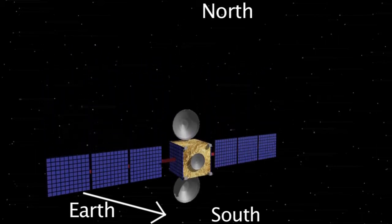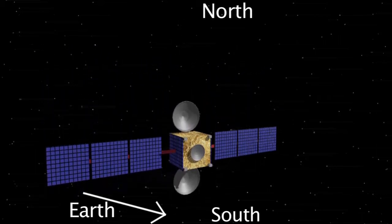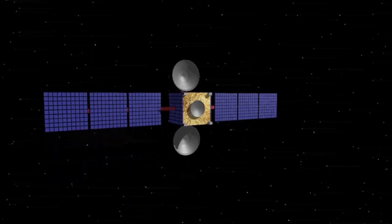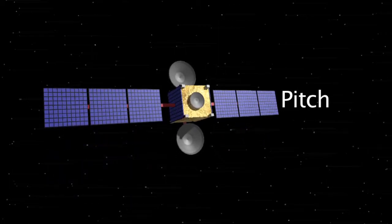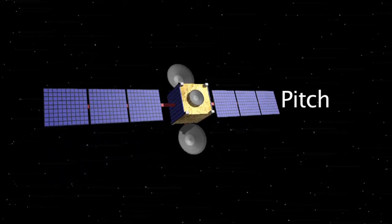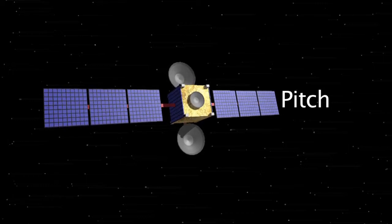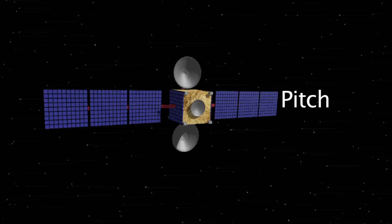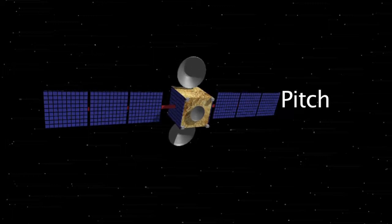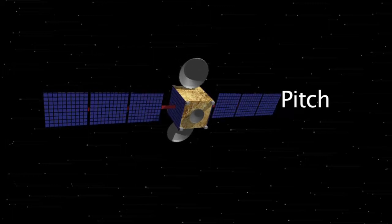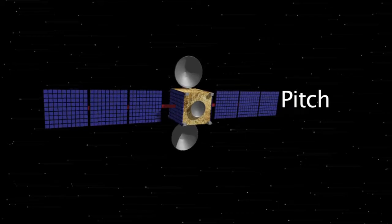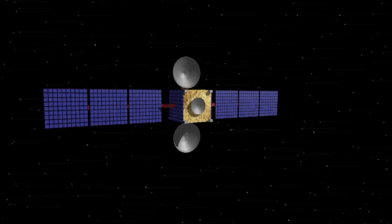The lifetime of a satellite is many times measured in the amount of fuel it has. Once a satellite uses all its fuel, it is unable to maintain its position in space as well as its orientation towards the Earth and can no longer be used. The typical lifetime of a satellite is 10 to 15 years.